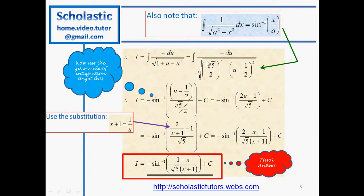We can now apply the arc-sine formula with x equal to u minus 1/2 and a equal to root 5 over 2, giving inverse sine of (u minus 1/2) divided by (root 5 over 2), plus the constant of integration C. Finally, we back-substitute using u equal to 1 over (x+1), simplifying the terms, and the final answer is inverse sine of (1 minus x) over (√5 times (x+1)), plus C.